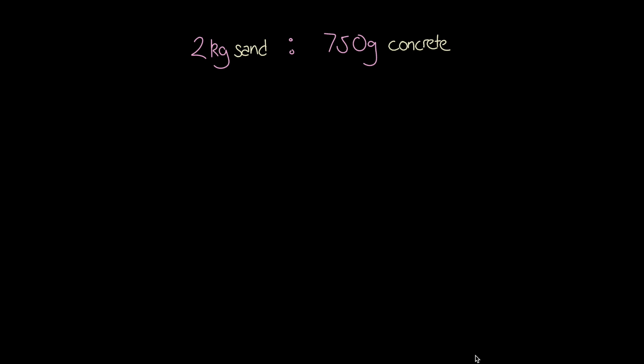In the final part, let's take a quick look at how we could use prime factor trees to simplify some big ratios quickly. I've been given the ratio of 2 kilograms of sand to 750 grams of concrete for a cement mix, and I want to find the simplest ratio for a bulk order. First, we need to convert the 2 kilograms into grams, giving us 2000 grams in total.